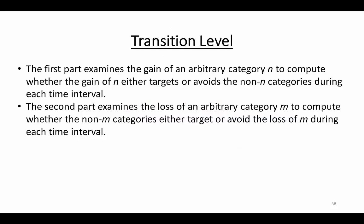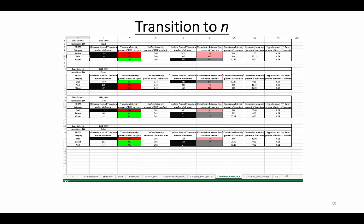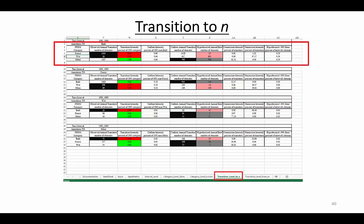The transition level has two parts. The first part examines the gain of an arbitrary category N to compute whether the gain of N either targets or avoids the non-N categories during each time interval. The second part examines the loss of an arbitrary category M to compute whether the non-N categories either target or avoid the loss of M during each time interval. Each part has its own Excel sheet. Each time interval is displayed separately as you scroll left to right, and the categories are aligned top to bottom.